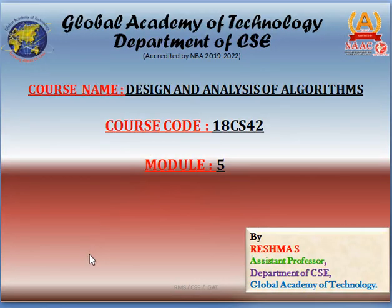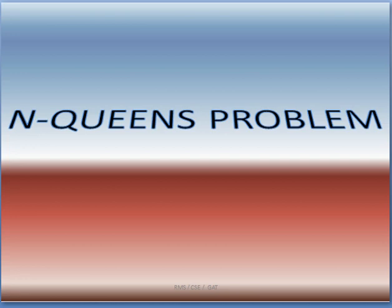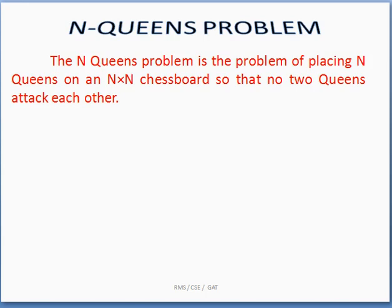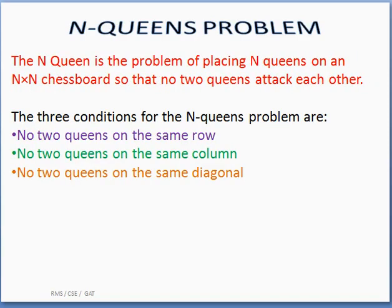Welcome to the discussion of a very interesting topic in module 5: the N-Queens problem. The N-Queens problem is the problem of placing N queens on an N×N chess board such that while placing these N queens on the board, no two queens attack each other. To ensure they cannot attack each other, we need to follow three conditions.